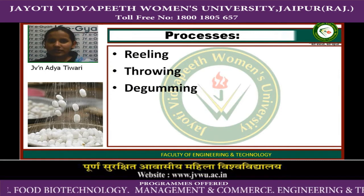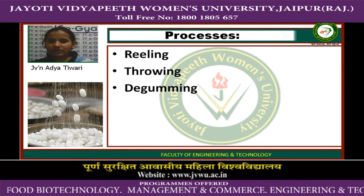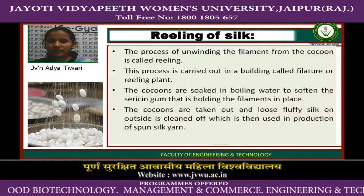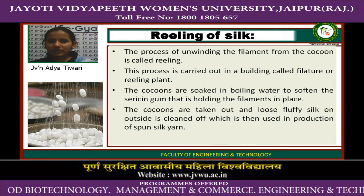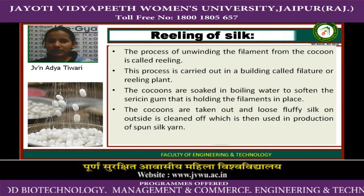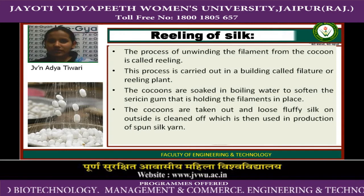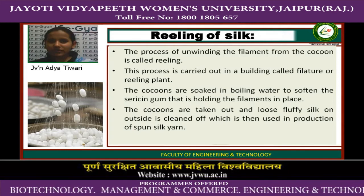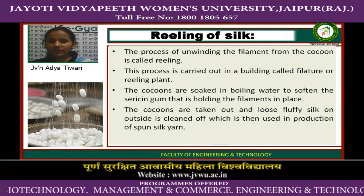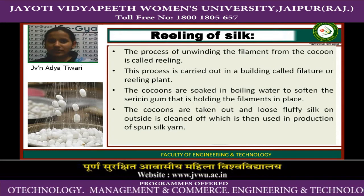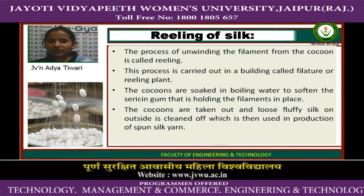Now the process of silk fiber manufacturing. The first steps are reeling, throwing, and degumming. In reeling, the process of unwinding the filament from the cocoon is called reeling. This process is carried out in a building called a filature or filature. Cocoons are soaked in boiling water to soften the sericin gum holding the filaments in place.